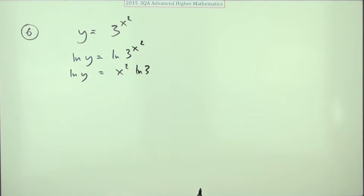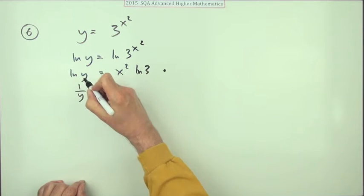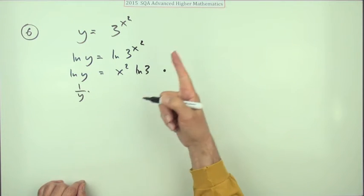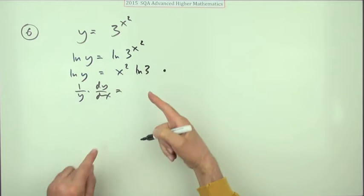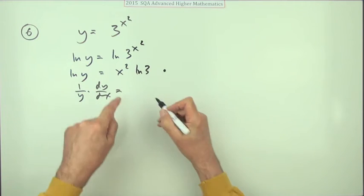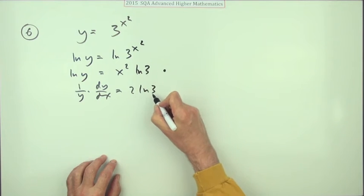Then differentiate both sides. Now that's a function of a function here, so ln produces one over y, but the derivative of the y since it's a function of x is dy/dx. That's just a constant, so that'll just be 2 times that constant, 2 times ln 3 of x.